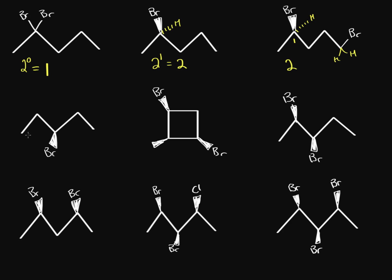What about this one? We have these carbons with multiple hydrogens — they can't be chiral carbons. What about this one? We have a bromine, an ethyl group, an ethyl group, and then a hydrogen. Since these are the same group — it's an ethyl and an ethyl — we have zero chiral carbons. That means 2 to the zero, so we have one stereoisomer. Be careful: sometimes they might draw a wedge to make it look like a chiral carbon, but you have to look at all the groups and ask if they are different groups.